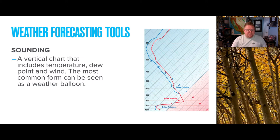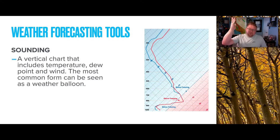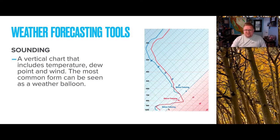Another tool is called sounding — a vertical chart that includes temperature, dew point, and wind. The most common form of sounding you're probably familiar with is a weather balloon. We send the balloon up and, based on the rate it moves through the atmosphere and the direction it gets blown, we can understand weather conditions at that location moving essentially horizontally all the way up. The horizontal lines in the diagram represent a pressure gradient with temperature going back and forth.